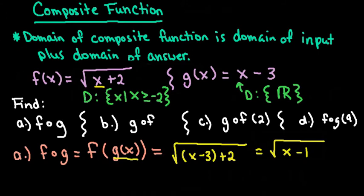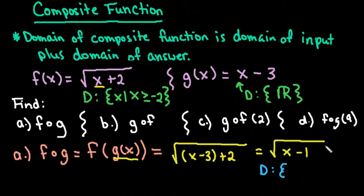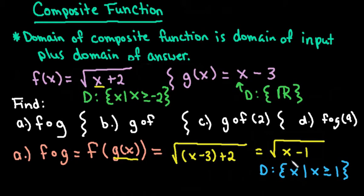The domain of my answer: the input is a polynomial function, so that's all real numbers, as well as the domain of the answer. Because we have a radical and we're taking the square root, I can only take the square root of 0 and above, so we end up with x such that x has to be greater than or equal to positive 1. If I tried to plug in a value like negative 5, it would give me an imaginary number, which is not an answer I'd be looking for.